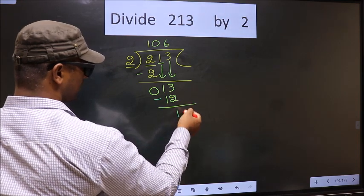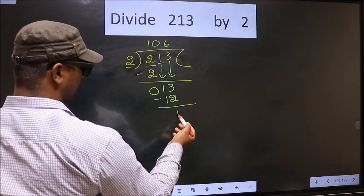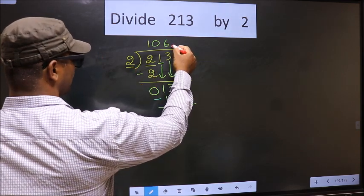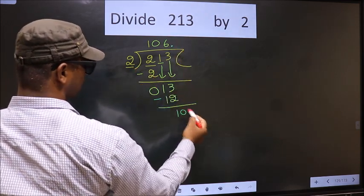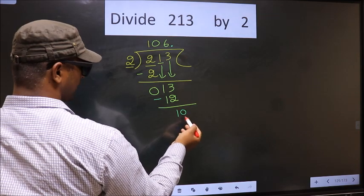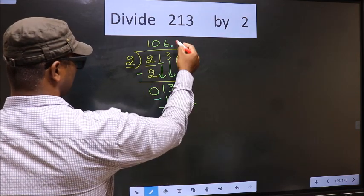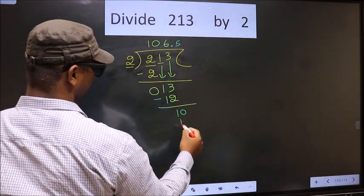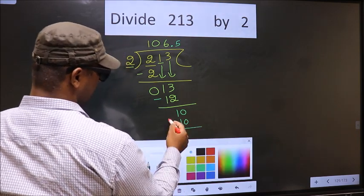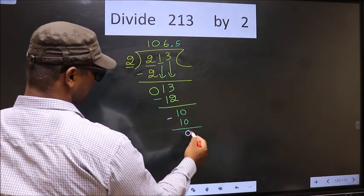Over here we did not bring any number down, and 1 is smaller than 2. Now you can put a dot. Take 0. So 10. When do we get 10 in the 2 table? 2, 5, 10. Now you subtract. 10 minus 10, 0.